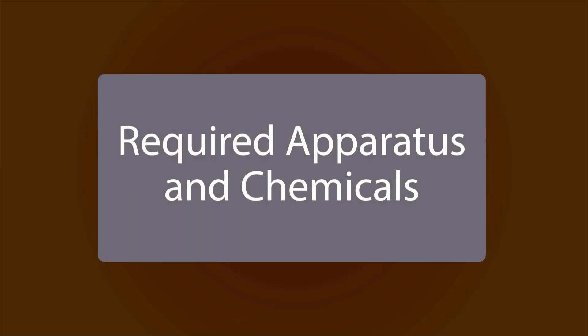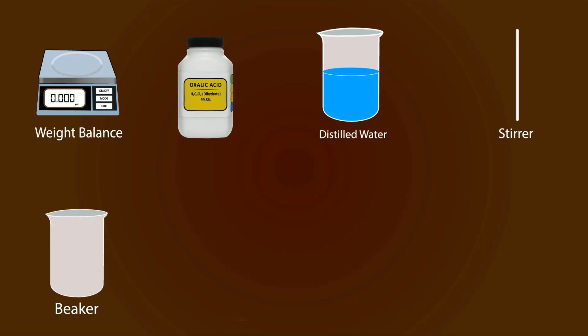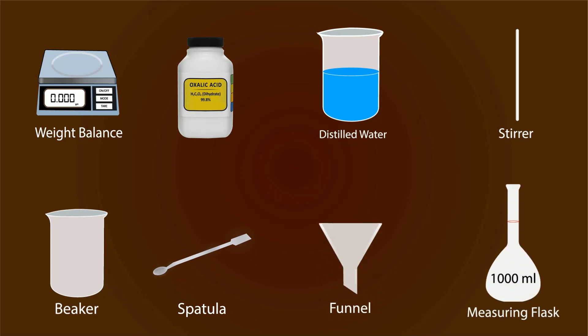The required apparatus and chemicals include a weight balance, oxalic acid, distilled water in a beaker, a stirrer, an empty beaker, a spatula, a funnel, and a volumetric flask of 1000 milliliters.